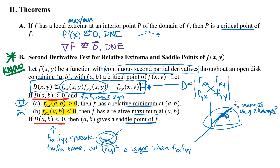In the next video we'll look at some examples where we find critical points for specific functions and classify them as locations that give local maxima, local minima, or saddle points.